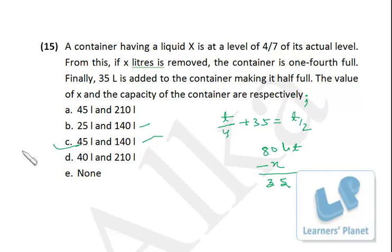So we have this as the correct option. I repeat: I assume the capacity of the container is T liters. From this, after X liters is removed, the container is one-fourth full. In one-fourth full container, that is T by 4, if we add 35 liters, then the container is half full, that is half of T. So from this we can calculate the value of T, that is 140 liters. So capacity of the container is 140.